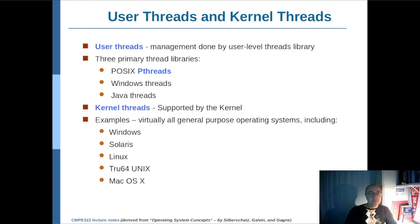Threads can be implemented at the user level as well as the kernel level. User threads are managed by user-level thread libraries, and we have three primary thread libraries. The first is POSIX or P-threads library, the second is provided by Microsoft for Windows systems, and the third is Java threads that comes with Java.